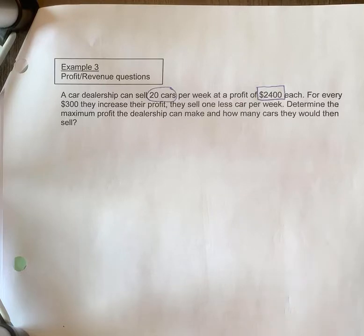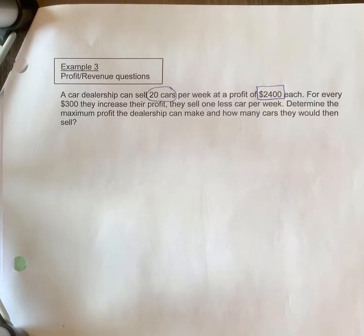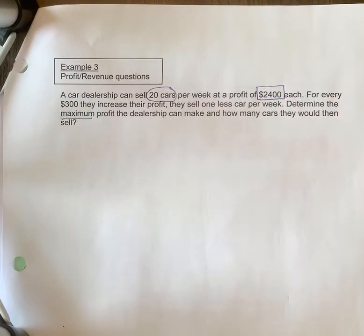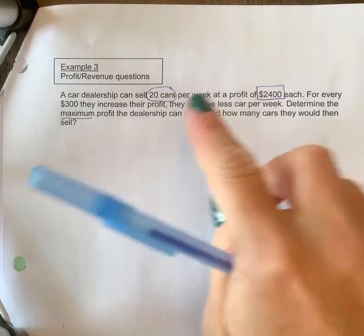makes sense. If you're increasing it, not as many people at the higher price are going to buy it. Determine the maximum profit the dealership can make and how many cars they would sell. So max profit tells me you're going to have a negative 'a' value, and it tells me it's a max/min problem.